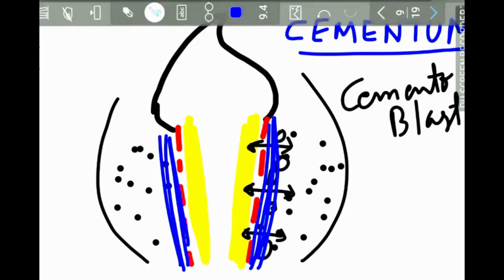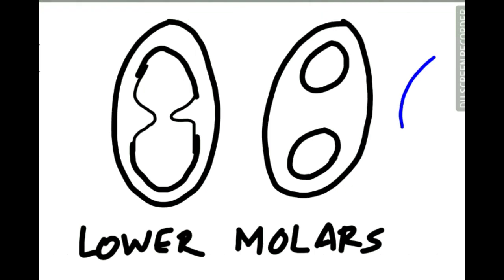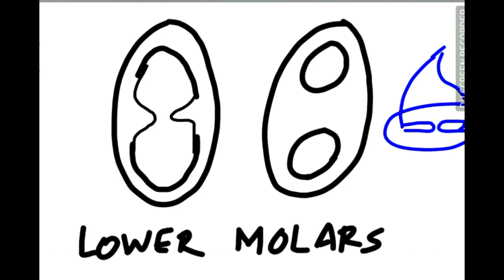Now let us see why the lower molars are made up of two roots. The cervical area of the enamel organ forms the epithelial diaphragm. If we see this cervical area in cross-section in the lower molars, we can see two diaphragms arising. These diaphragms grow towards each other and finally merge to form the two roots of the lower molars.